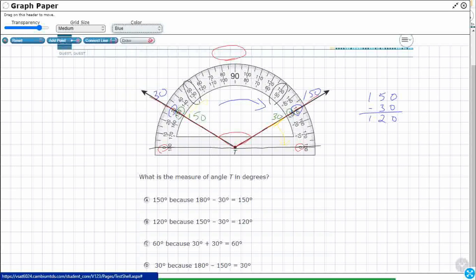So, how do we answer this? Well, let's take a look. What is the measure of angle T in degrees? 150, because 180 minus 30 is 150. Now, I mean this is the 150, but it's not 150 degrees, it's only 150 degrees if the other ray is on the zero, it's not on the zero, it's on the 30. So that's incorrect.